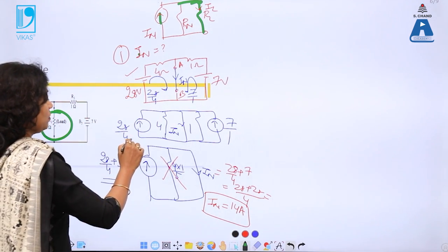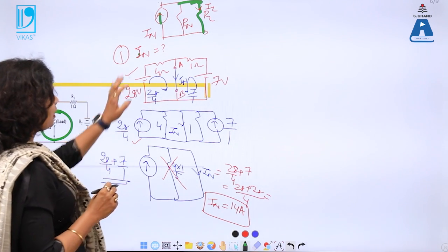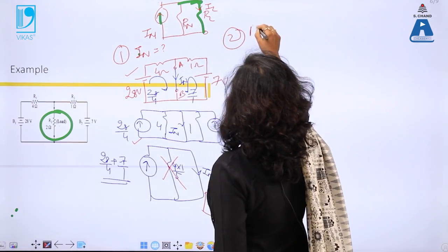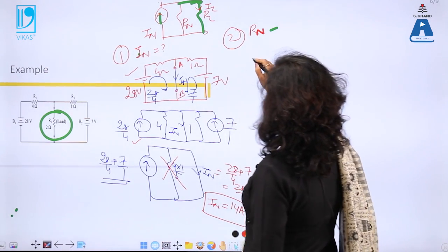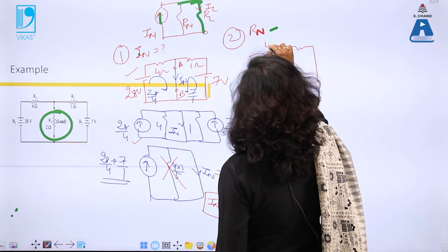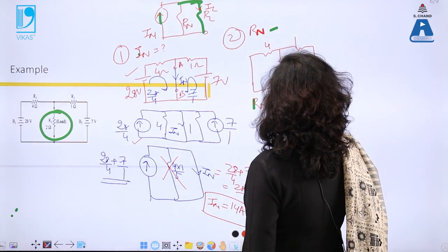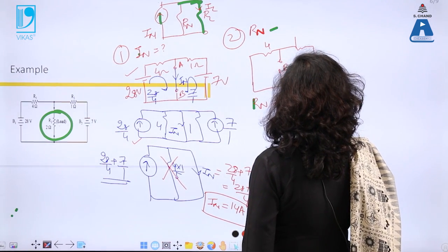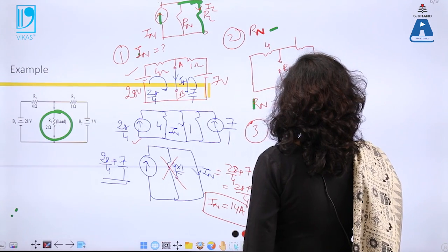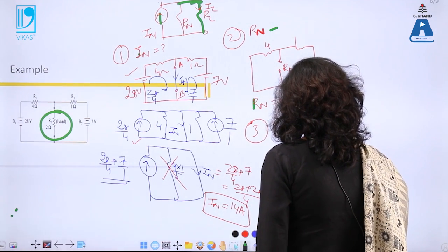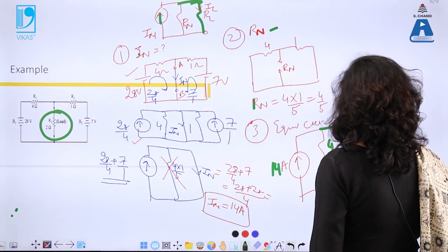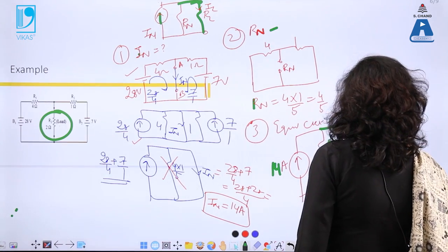For the second step, finding R_Norton: we remove all sources, so voltage sources are short-circuited. With both voltage sources removed, the resistances 4 Ω and 1 Ω are in parallel. So R_Norton = 4 × 1 / (4 + 1) = 4/5 Ω. For the equivalent circuit (third step), I connect I_Norton = 14 Amperes in parallel with R_Norton = 4/5 Ω across the open terminal AB.